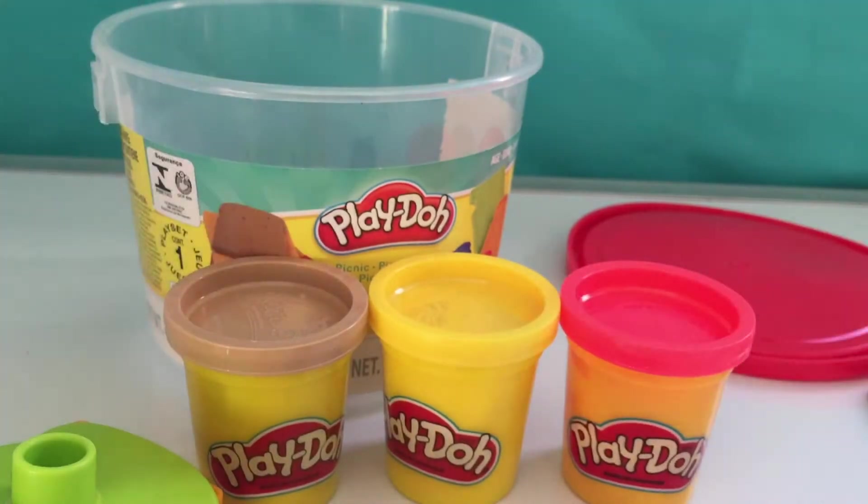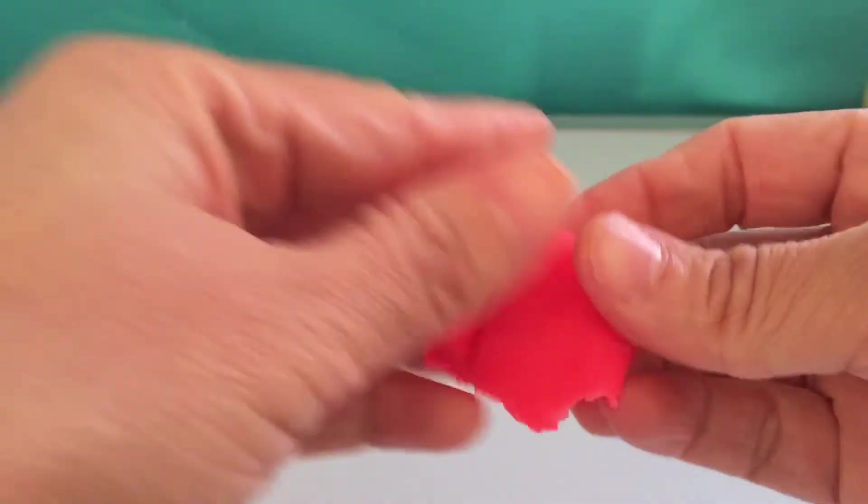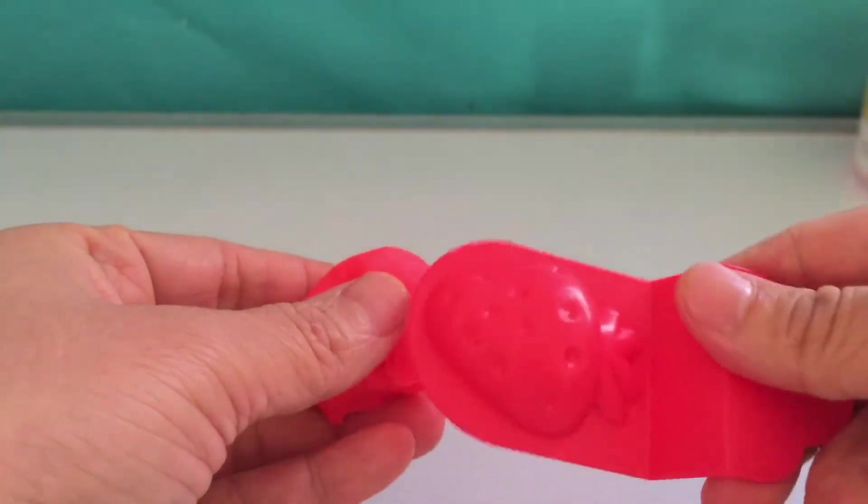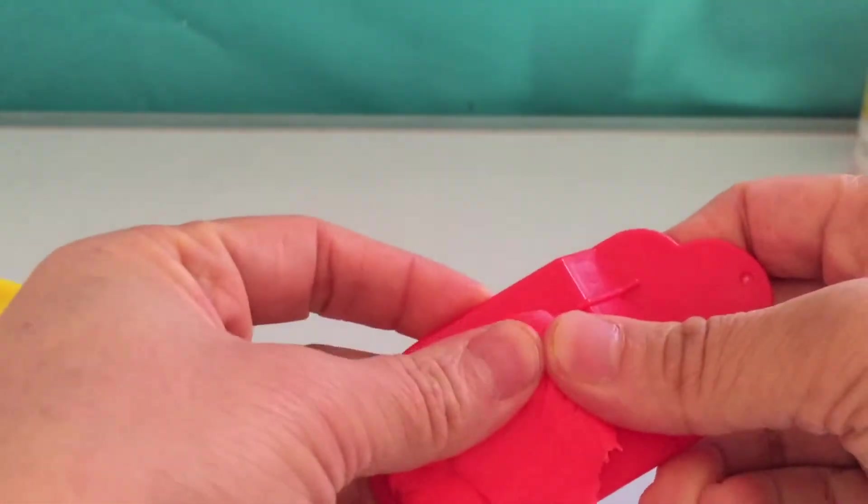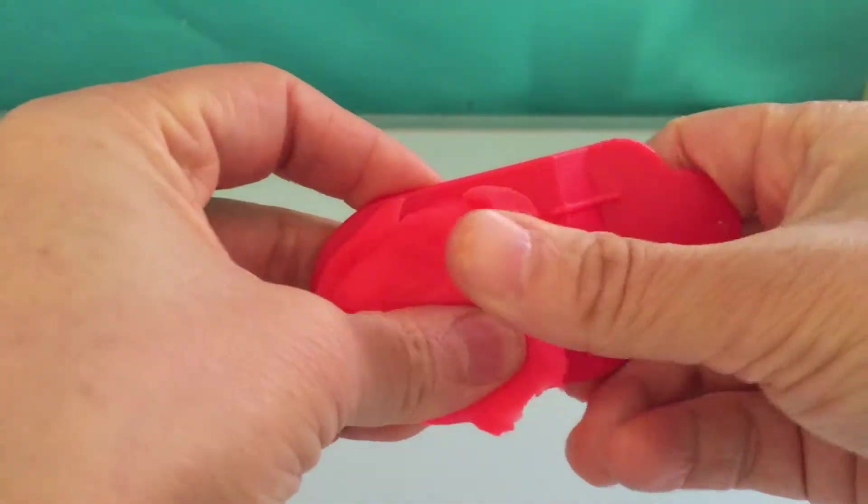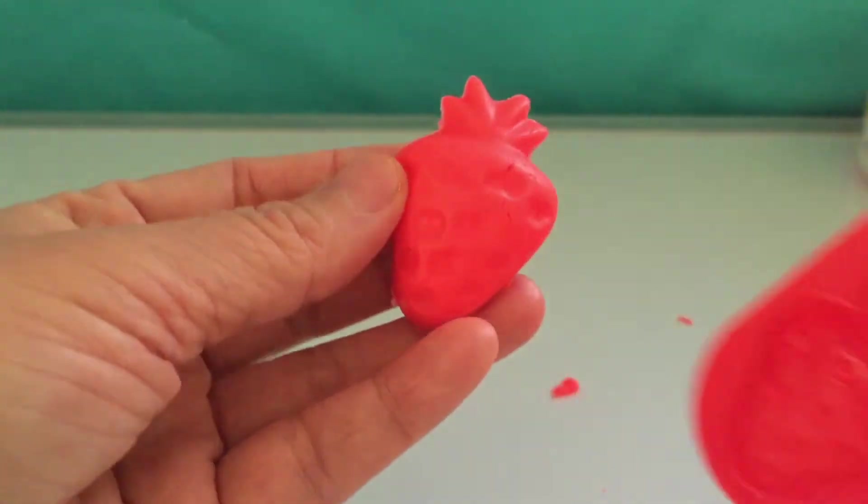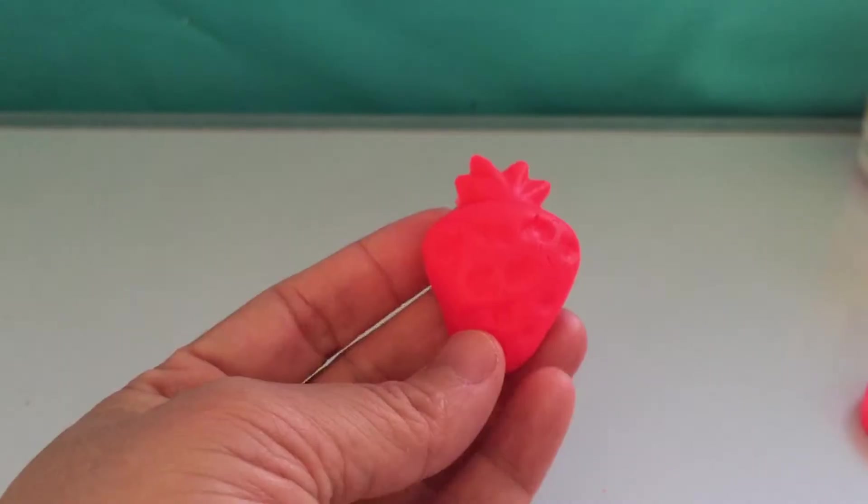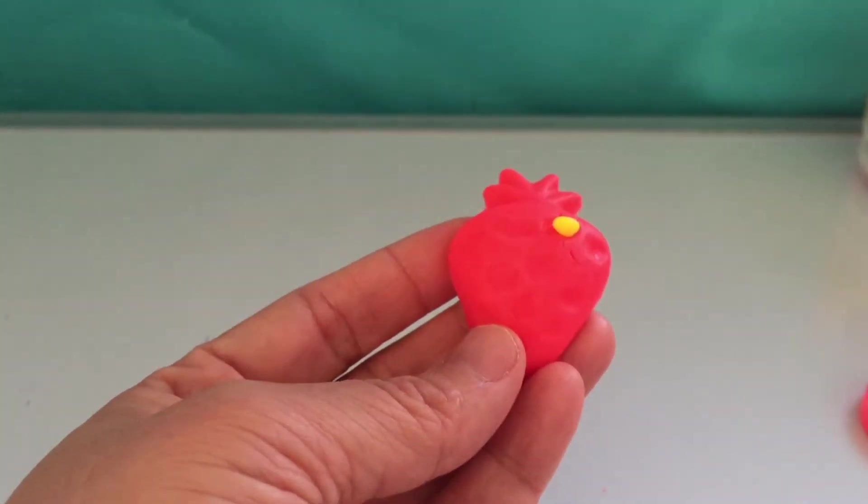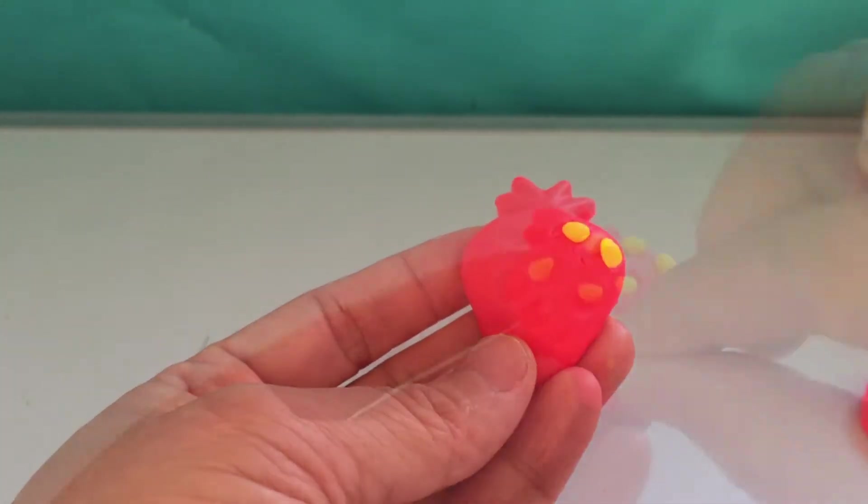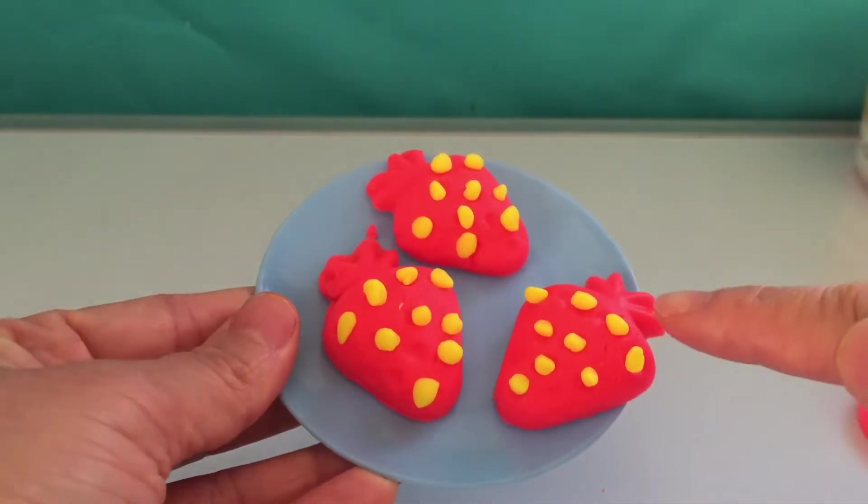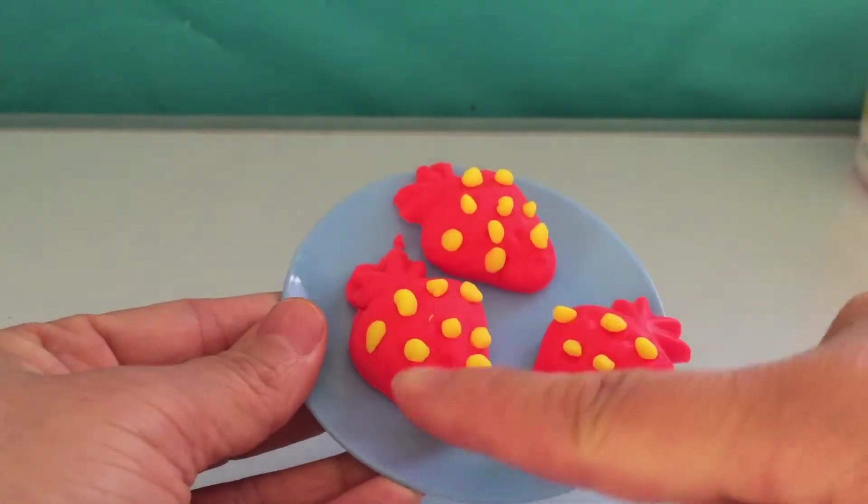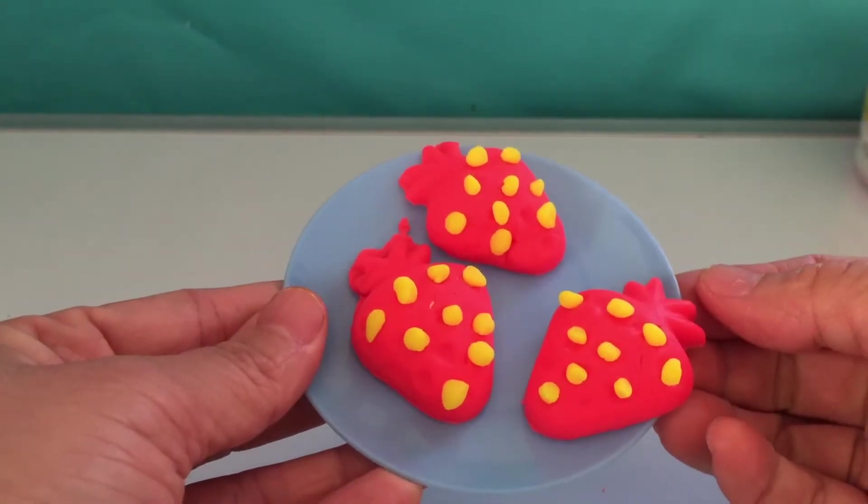Okay, let's get our picnic Play-Doh game started. With the red Play-Doh, we're going to make strawberries. I've got one red strawberry. One, two, three strawberries for our picnic.